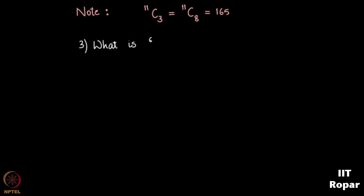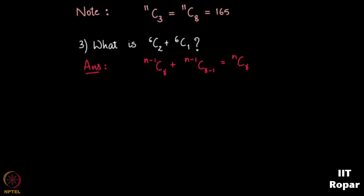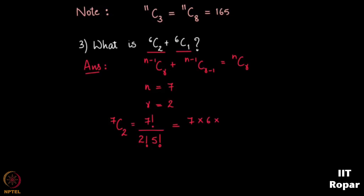Now, what is 6C2 plus 6C1? We have seen the result: (N−1) choose R plus (N−1) choose (R−1) equals N choose R. So we need not compute these terms individually. By observation, N is 7 and R is 2, so we calculate 7C2, which is 7 factorial by 2 factorial into 5 factorial, giving 7 into 6 into 5 factorial divided by 2 into 5 factorial. After cancellation we get 21. So 6 choose 2 plus 6 choose 1 equals 7 choose 2, which is 21.